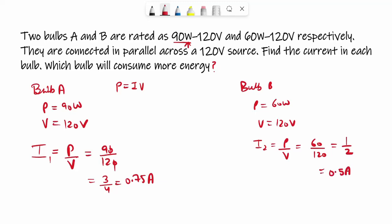So we can understand that the current required for bulb A is 0.75 and bulb B requires 0.5 ampere. So which bulb will consume more energy? It will be the first bulb. Why? Because it requires more current. So first bulb will be requiring more energy.